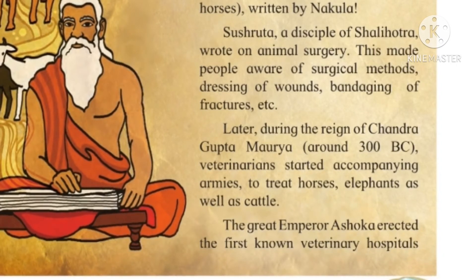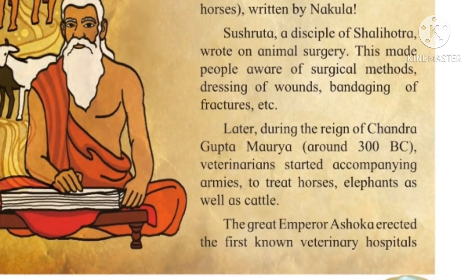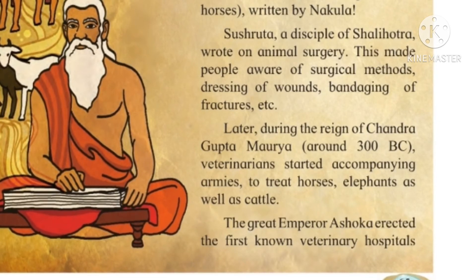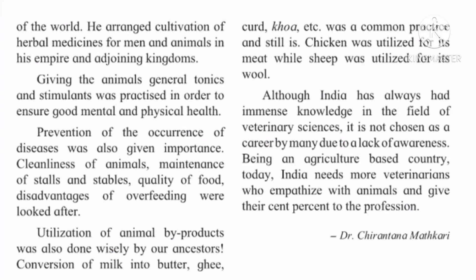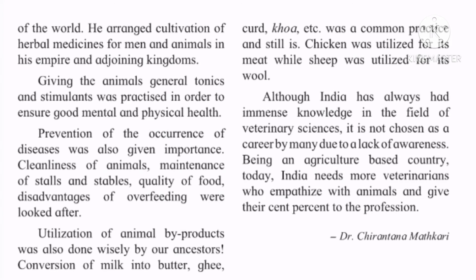Later, during the reign of Chandragupta Maurya around 300 BC, veterinarians started accompanying armies to treat horses, elephants, as well as cattle. Along with the armies, these veterinarian doctors would go on the battlefield so that the animals could be treated properly. The great emperor Ashoka erected the first known veterinary hospital in the world. He also arranged cultivation of herbal medicines for men and animals in his empire and adjoining kingdoms. Giving animals general tonics and stimulants was practiced to ensure good mental and physical health, as animals were used on a very large scale during those times — in wars on elephants and horses, and during cultivation with bullocks.